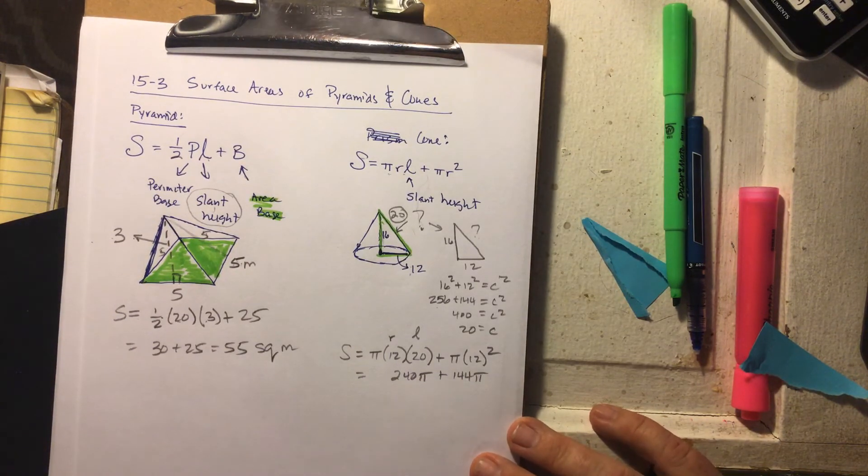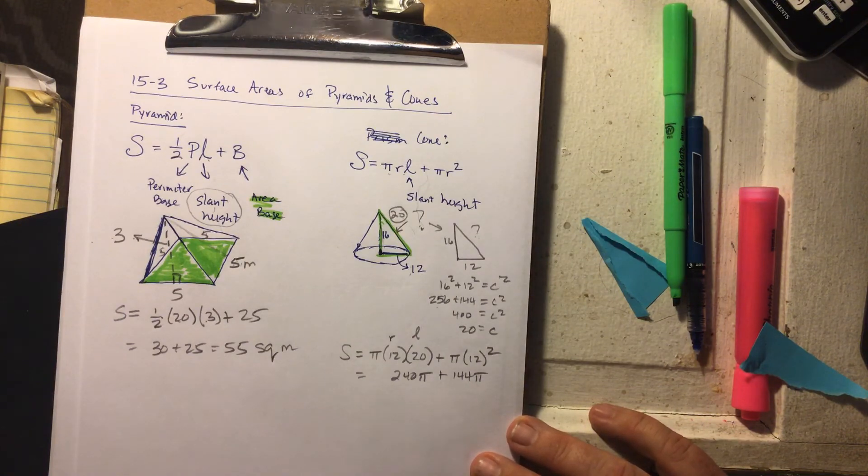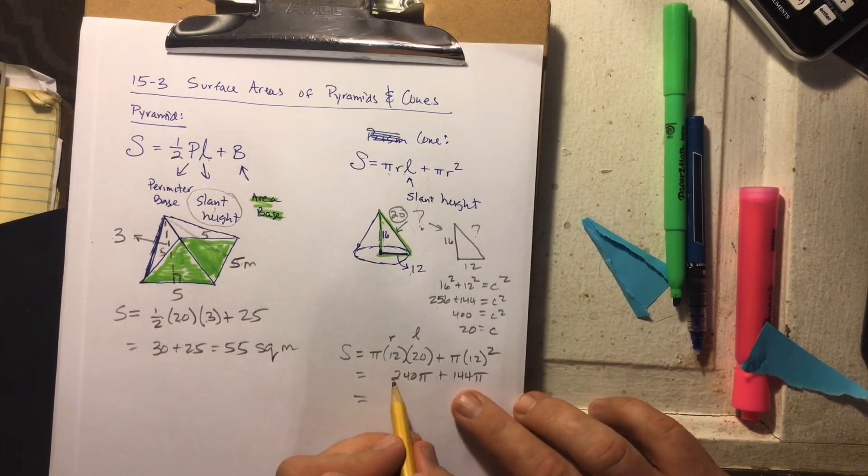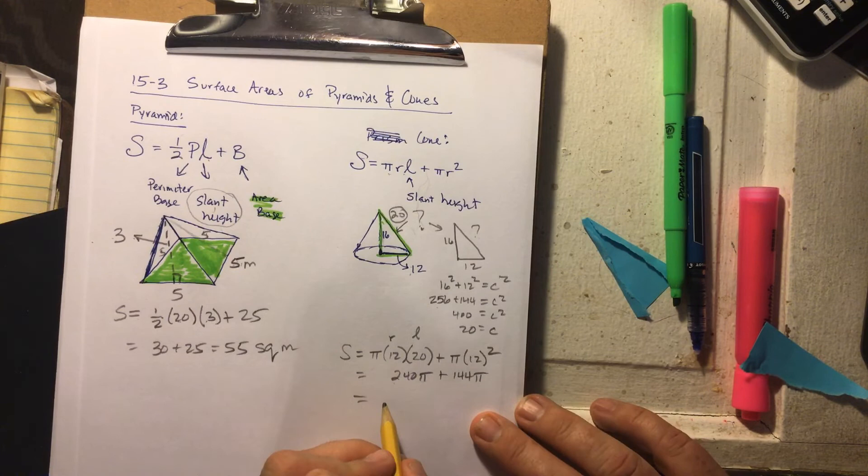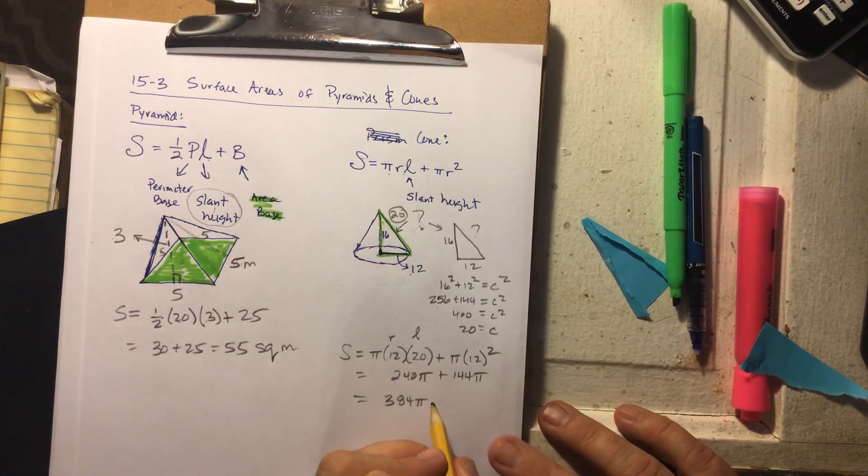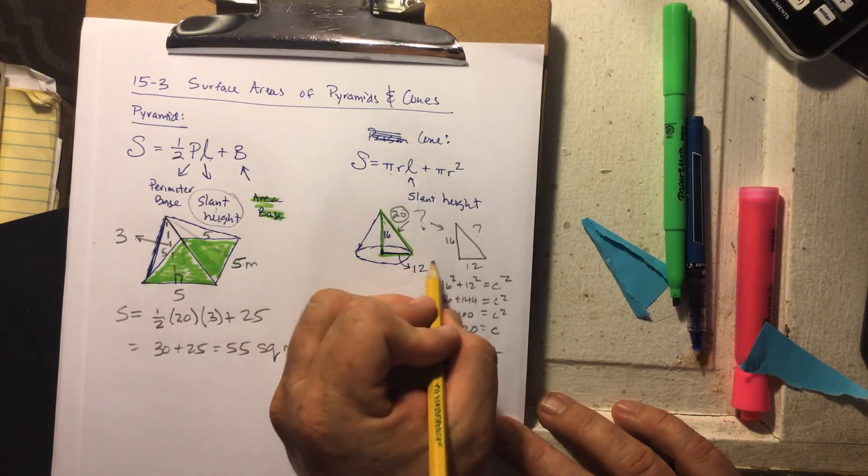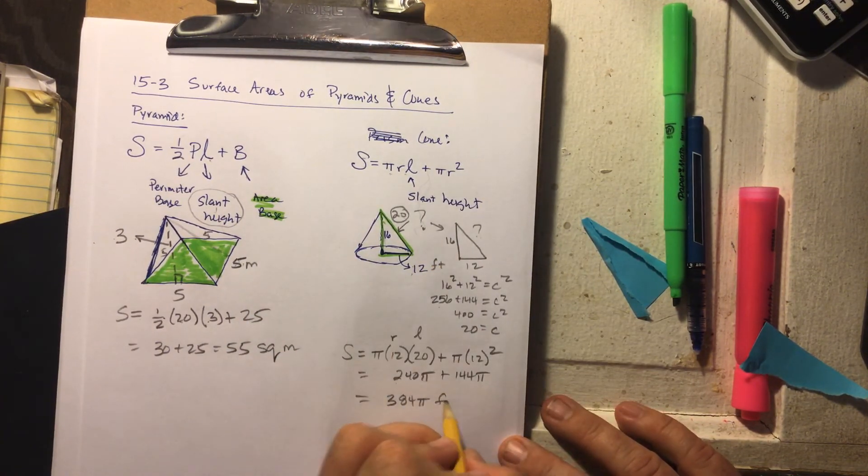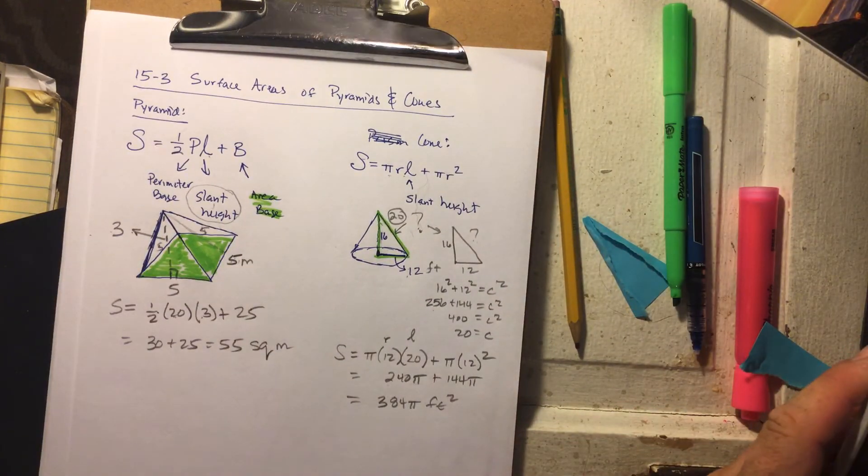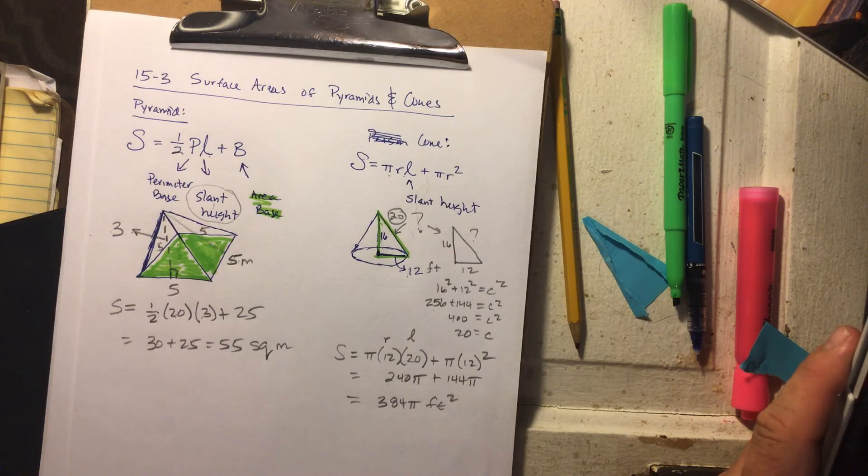Guys okay with that so far? So if we have 240 pi plus 144 pi, that's going to be 384 pi, and they give it to us in feet, it's area, so it's feet squared. Let's just make sure, 12 times 20, double checking my calculator, plus 12 squared, it's 384 pi.